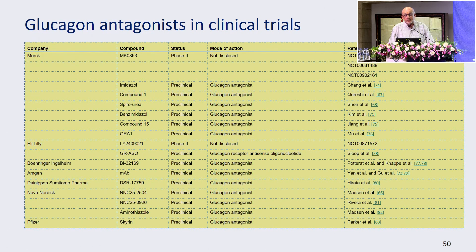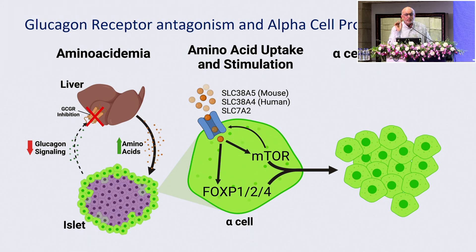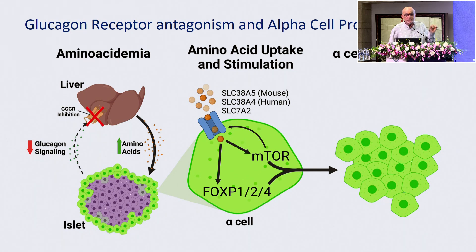These are all the glucagon antagonists in clinical trials, but I'm going to tell you that none of them is going to make it to the market. While there's a benefit in A1C, they cause hypoglycemia, increase glucagon, cause weight gain, increase blood pressure, increase LDL, increase aminotransferases, and increase steatosis. Very importantly, there is alpha cell hyperplasia. When you suppress glucagon, the amino acids go to the islet cell and you work at the level of FOXP1 and mTOR pathway. When you activate the mTOR pathway, there is proliferation of the alpha cells — and alpha cell proliferation is a natural response in diabetes.